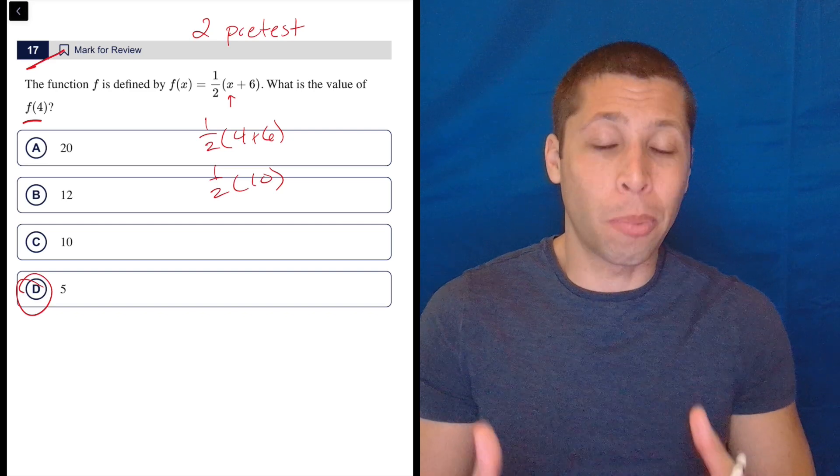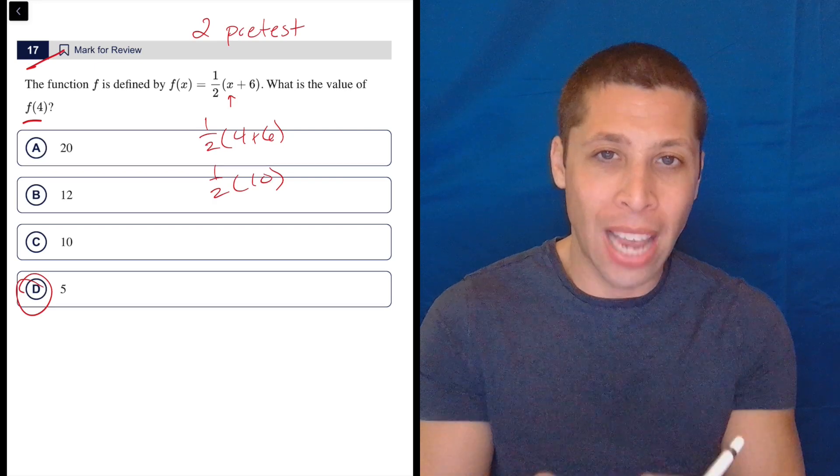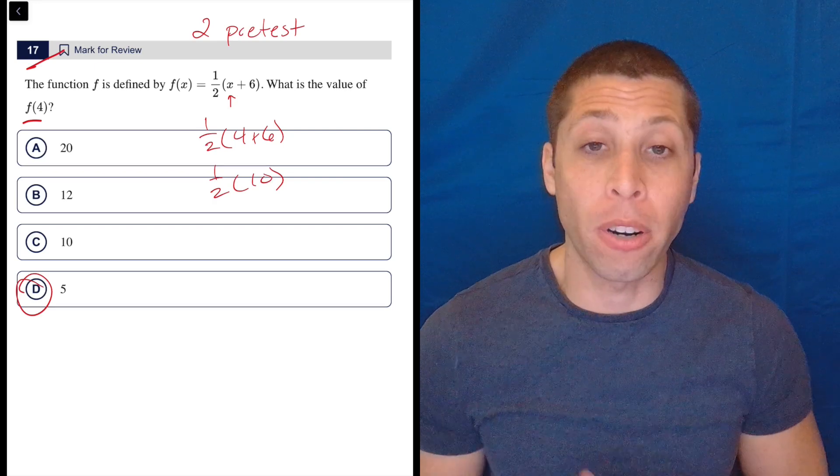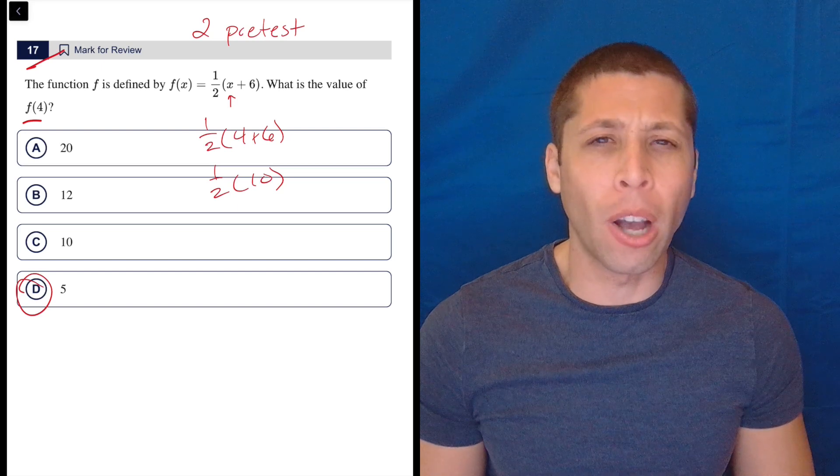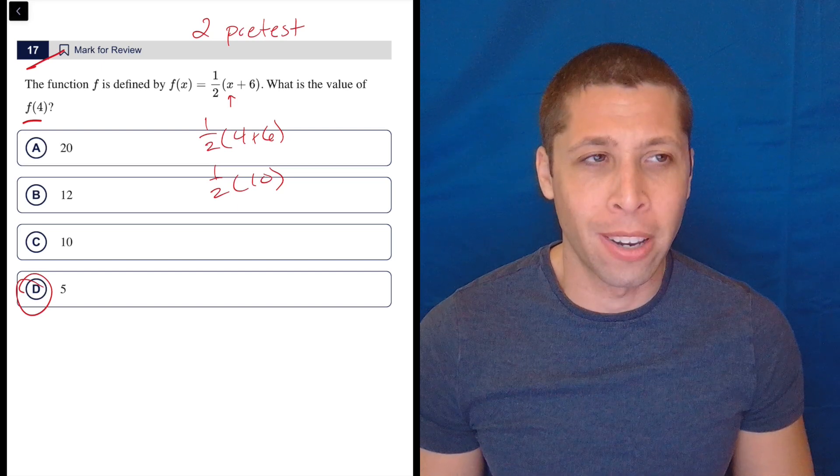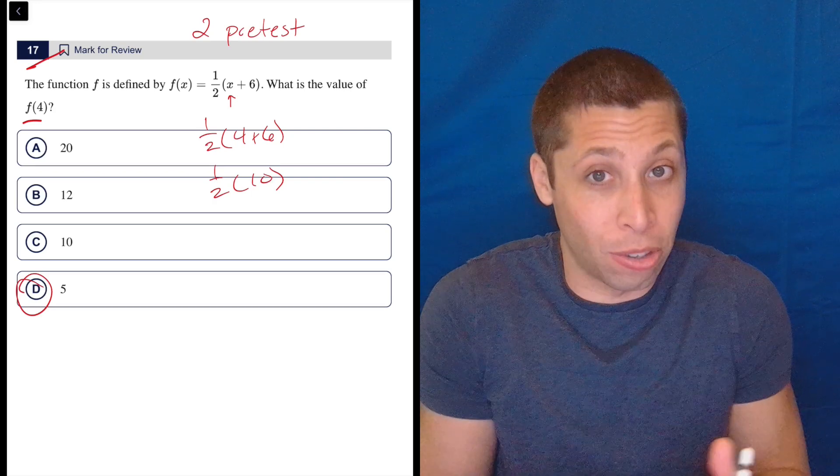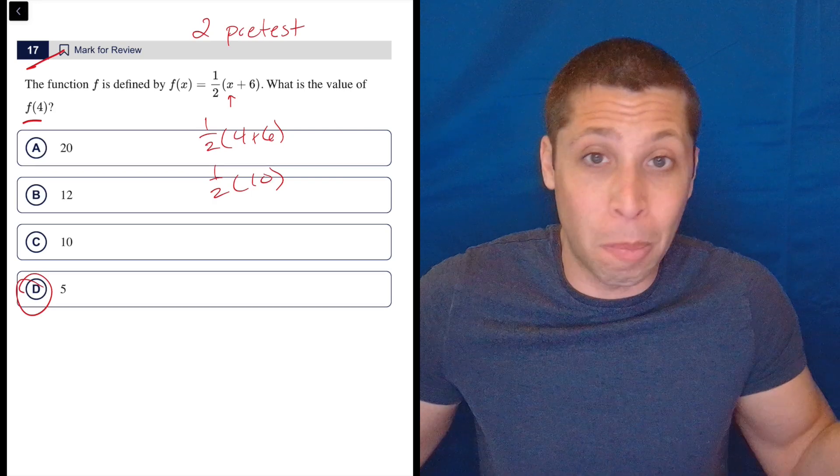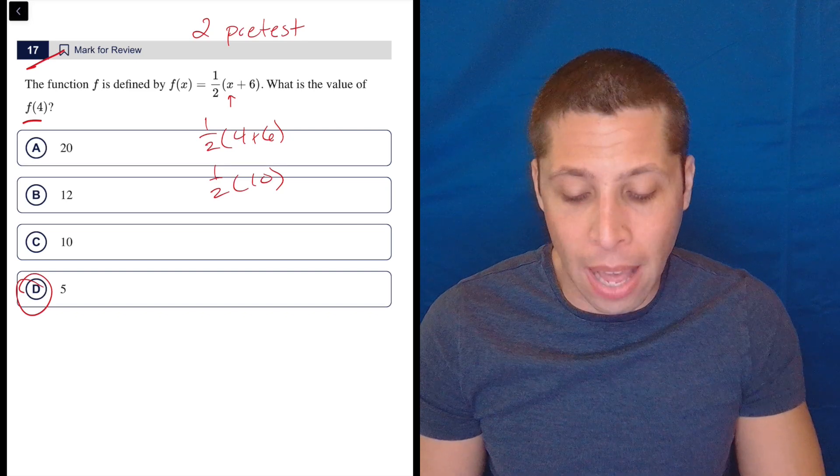Plus, these are questions, these pretest questions, that they want to release eventually. They're testing them out because they want to make them part of the next version of the test or something like that. So you can't look at a question and be like, oh, this is too weird for the SAT. This must be the fake question. No. I mean, this one's a really straightforward fake question. So there's nothing weird about it at all. It's basic function notation. But just the placement of it is what alerted me to that possibility.